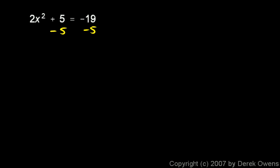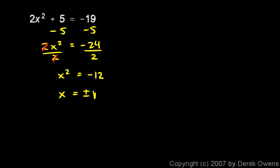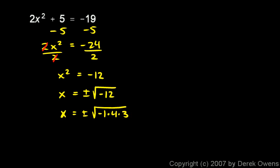Next: 2x² + 5 = -19. First I subtract 5 from each side, leaving 2x² = -24. Then I divide each side by 2, leaving x² = -12. Taking the square root of both sides gives x = plus or minus the square root of -12. Breaking this up: -12 = -1 times 4 times 3. The square root of -1 becomes i, the square root of 4 becomes 2, and the square root of 3 stays as √3. So x = plus or minus 2√3·i.